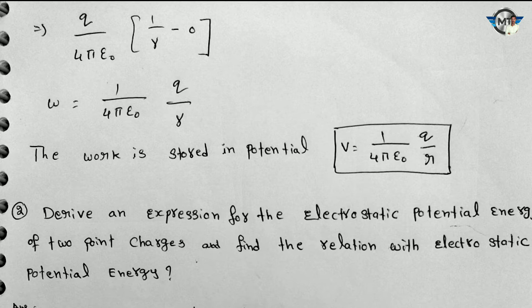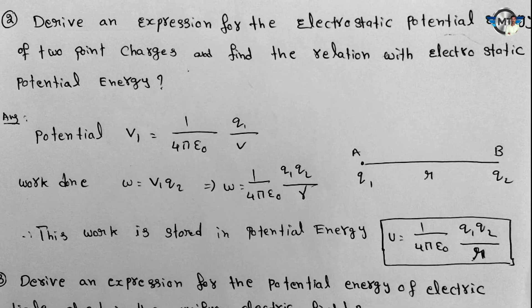The work done is stored as electric potential. So V is equal to 1 by 4 pi epsilon naught, q by r. Second question: Derive an expression for the electrostatic potential of two point charges and find the relation with electrostatic potential energy.